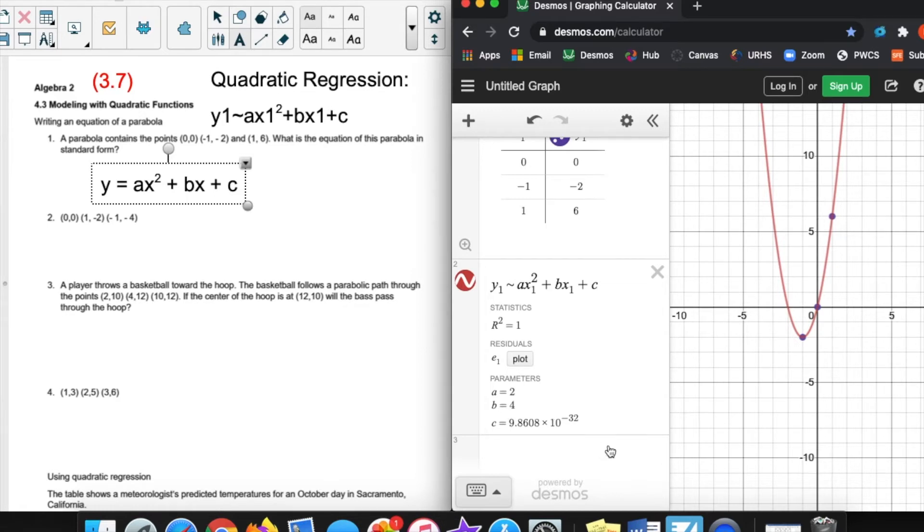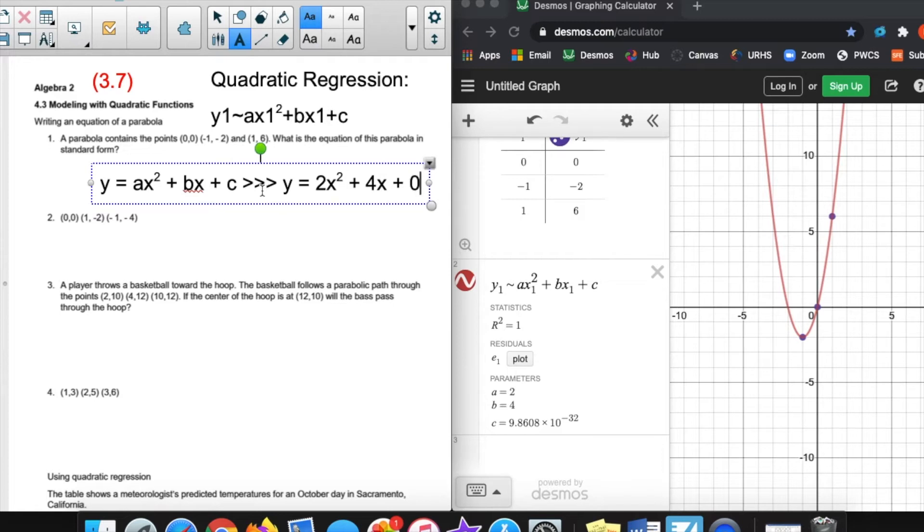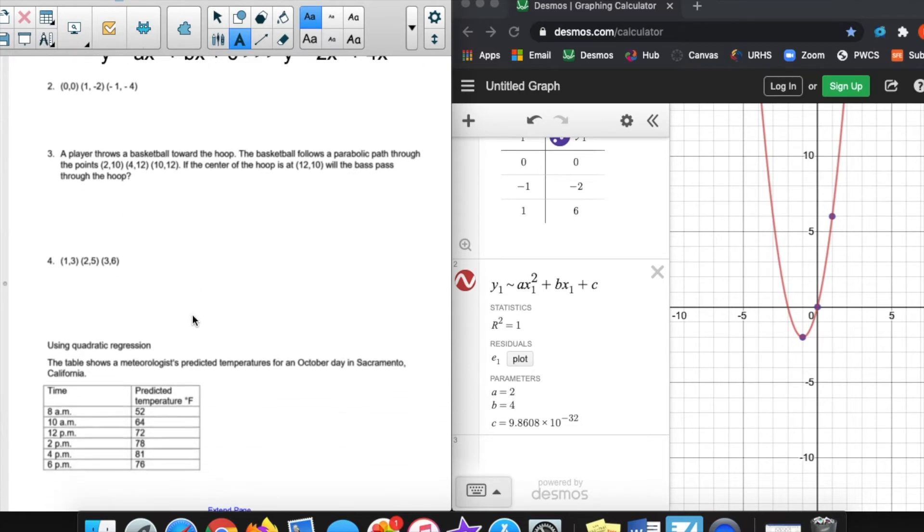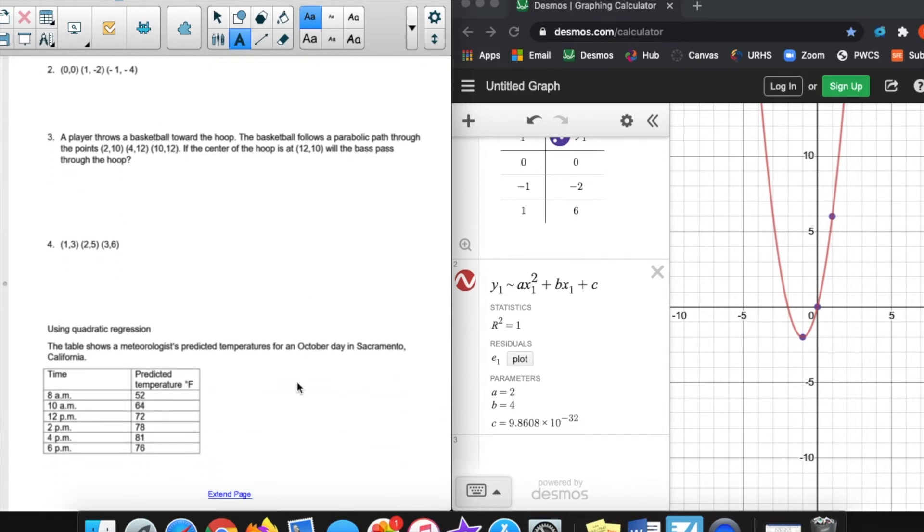And so my equation with these values for this problem would be y equals 2x² plus 4x. You could say plus 0, or you could just drop that c value off, because 0 doesn't really change it. So this would be my final answer. That would be the equation of this parabola. That's the process of writing that given a set of points. Now we're going to skip over number 2 and just look at number 3, and then we're going to look at this real-life problem.